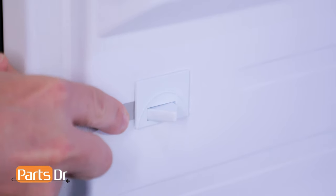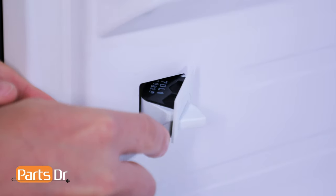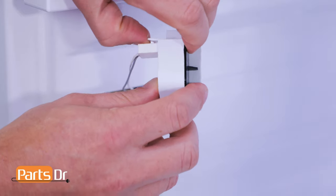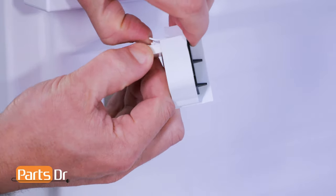Using a tool with a thin flat edge, insert it into the front of the switch to release the locking tab, then pry out to remove. Now pry the locking tab to release the electrical connector.